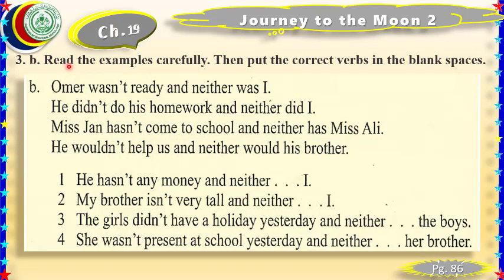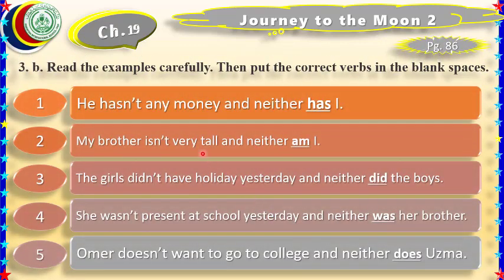This is exercise 3b. We are asked to put the correct verbs in the blank spaces. In the previous exercise, sentences were positive, so we used 'and so.' Here the sentences are negative, so we use 'and neither.' For example: 'Umar wasn't ready and neither was I.' 'He didn't do his homework and neither did I.' 'Miss John hasn't come to school and neither has Miss Ali.' 'He wouldn't help us and neither would his brother.' Part one: 'He hasn't any money and neither have I.' Part two: 'My brother isn't very tall and neither am I.'